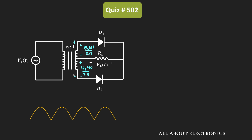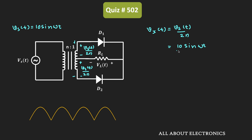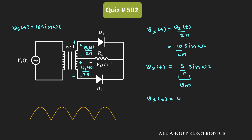The overall voltage on the secondary side is equal to Vs/n, and each half is Vs/2n. We have been given that Vs is equal to 10·sinωt. So we can write Vx as (10·sinωt)/2n, or Vx = Vm·sinωt, where Vm is equal to 5/n.